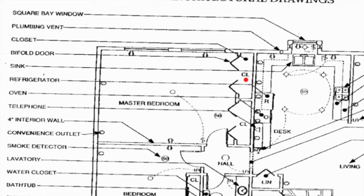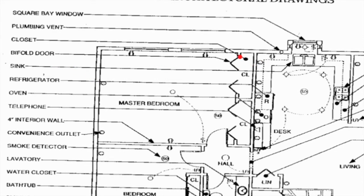Closet — CL or CLO will represent a closet. So this space here for this master bedroom, this would be a closet, this would also be a closet. Bifold door — closet doors that fold open and close look like a little triangle; it kind of looks like a bifold door, so that one's pretty straightforward.